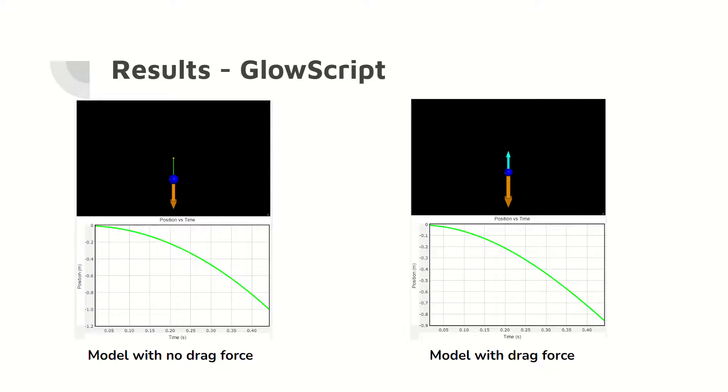Here are the GlowScript results for the computational models. The model without the drag force is on the left and the model with the drag force is on the right.